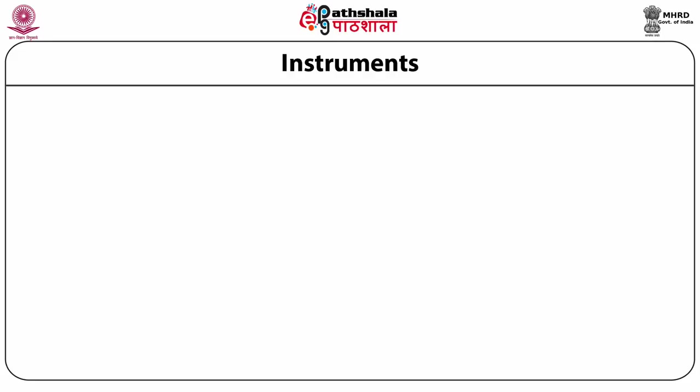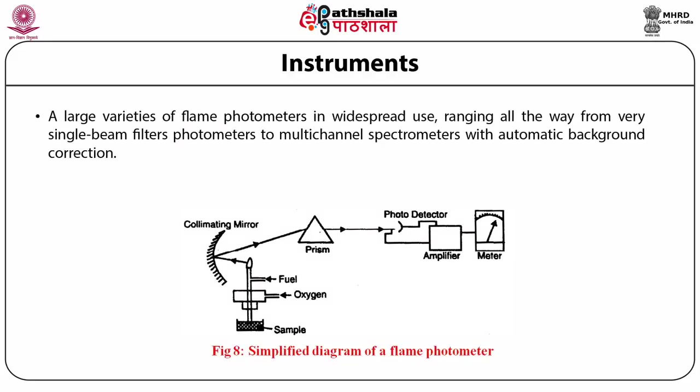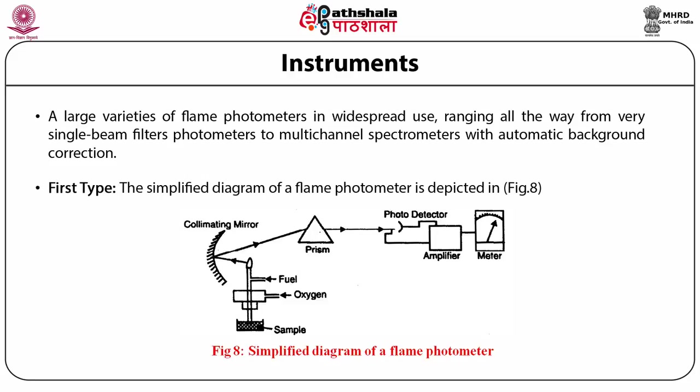There are large varieties of flame photometers in widespread use, ranging from various single-beam filter photometers to multi-channel spectrometers with automatic background correction. The first type is a simplified flame photometer in which the sample is aspirated, the excited radiation is transported by a collimating mirror, passed through a prism, and detected by photodetectors.